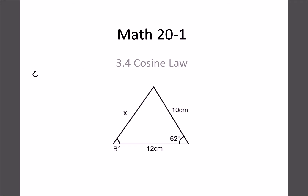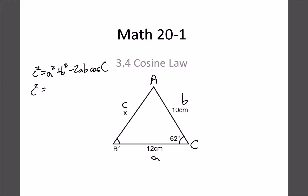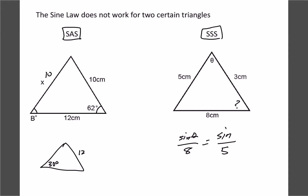Our cosine law formula is c² = a² + b² − 2ab·cos C. Label x as side c, making the 62° angle C, the side of length 12 side a, and side 10 side b. Plugging in: c² = 12² + 10² − 2(12)(10)·cos 62°. Type that into the calculator, take the square root, and you're finished.